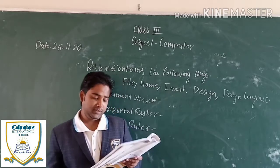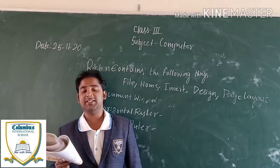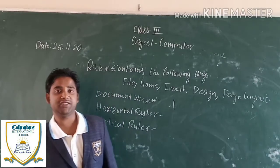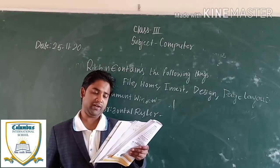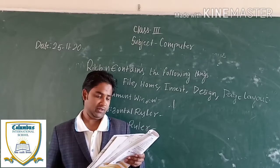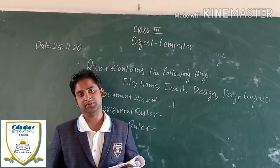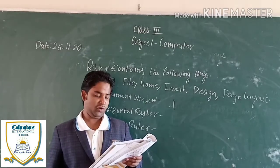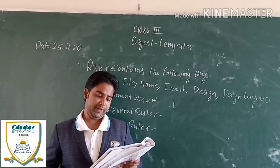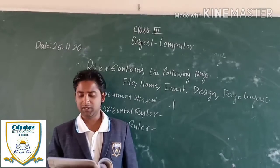Now we will talk about cursor. Cursor is a flashing vertical line. It is also known as the MS Word pointer, which tells where on the document the character you type will appear. It moves as you go on typing, and it can be placed anywhere in the document using the mouse or arrow keys.